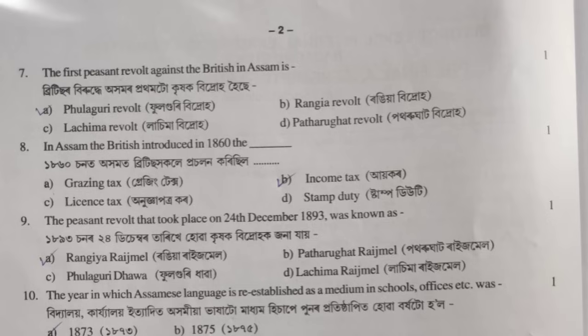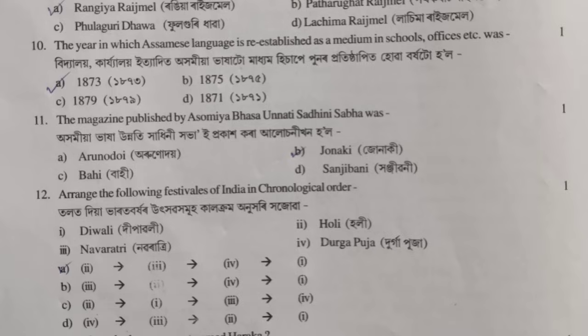The year in which Assam's language was re-established as a medium of school, office, etc. — the answer is option A, correct: 1873. Similarly, the magazine was published — option A, correct: 1873.